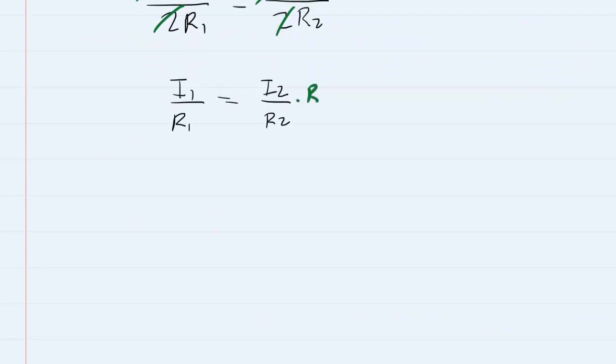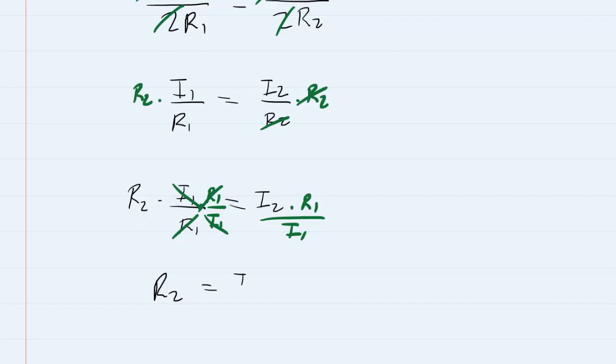We can do so by first multiplying both sides of the equation by R2 so the R2s cancel out here. We then have R2 times I1 over R1 is equal to I2. Then to finish solving for R2, multiply both sides by R1 over I1. This way the R1s on the left side cancel as do the I1s. So finally we have R2 equal to I2 times R1 divided by I1. We simply plug in the known values now.